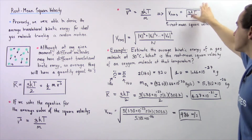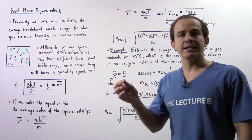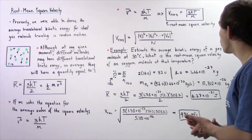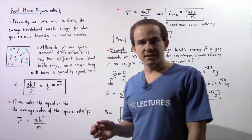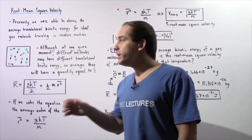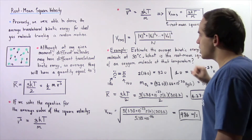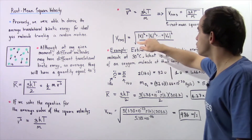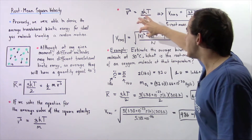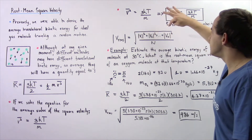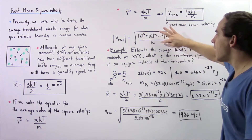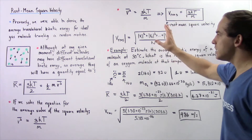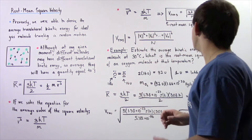Here m is the mass, k is the Boltzmann constant equal to 1.38 times 10 to the negative 23 joules per Kelvin, and T is the temperature in Kelvin. Now if we know the actual velocities of every single molecule within our system, we can find the root mean square velocity using the following equation: v_rms equals the square root of the sum of the squares of the absolute values of every molecule's velocity, divided by the total number of molecules N. These are two ways to find the magnitude of the root mean square velocity.